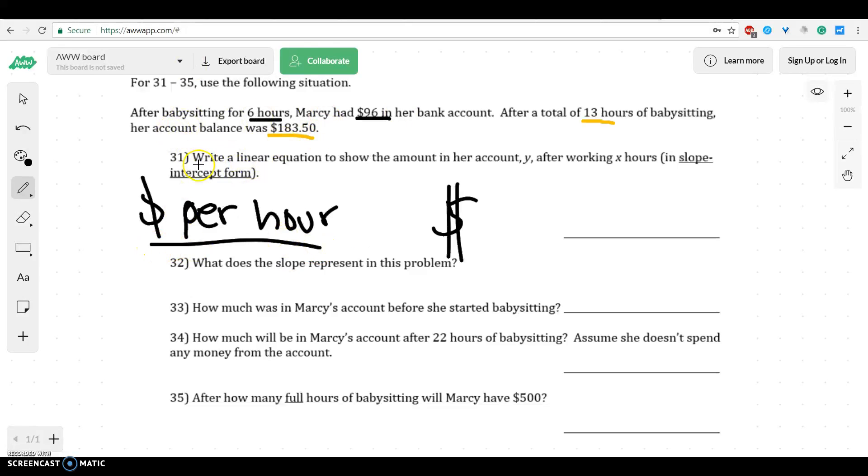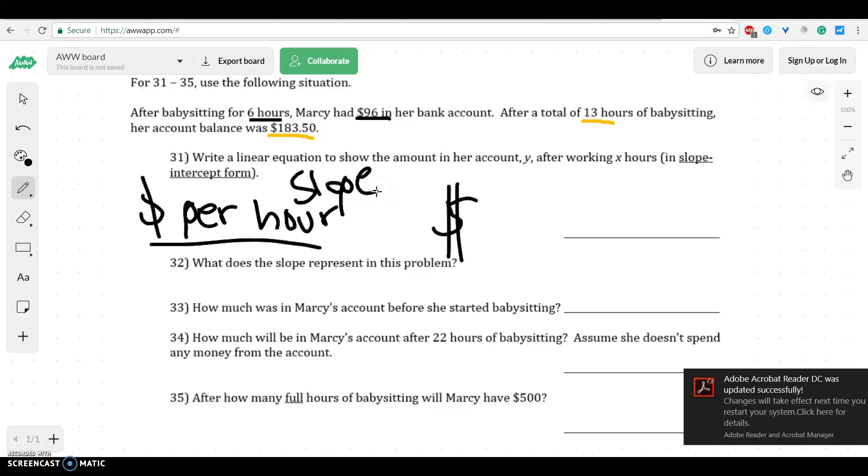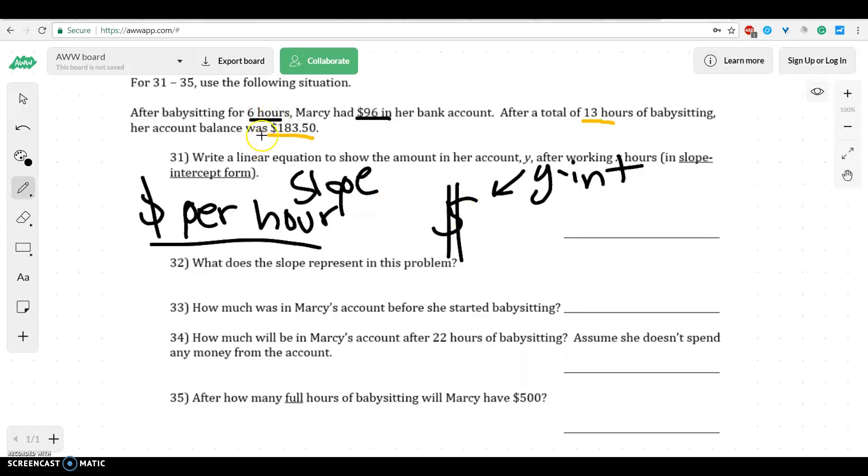So we've got to figure out how much she started with and then how much she makes per hour. That's going to be part of our line equation. The per hour part is going to be your slope because it's happening at multiple times. The starting point, that's going to be your y-intercept. So we basically just have to find the slope and the y-intercept. To do this, we're going to use this information to help us out.